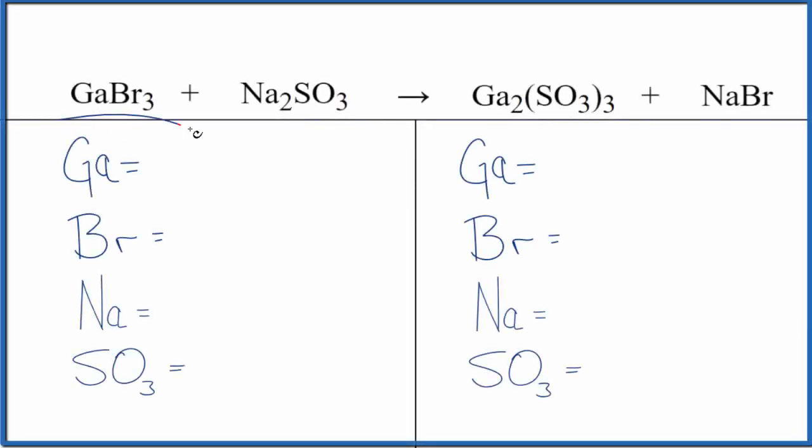Let's balance the equation for GaBr3 plus Na2SO3, Gallium Bromide, Gallium 3 Bromide, and sodium sulfite. This is the sulfite ion.